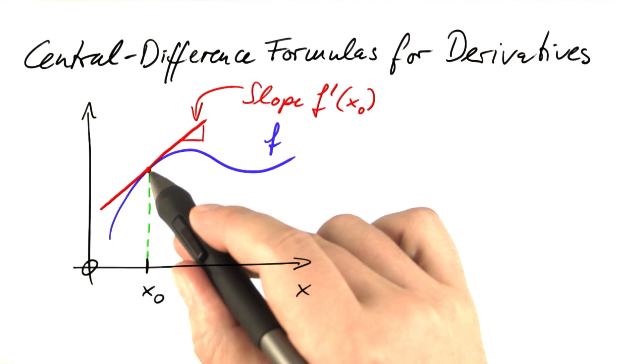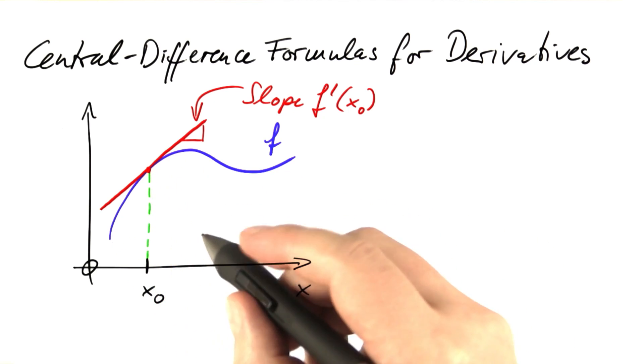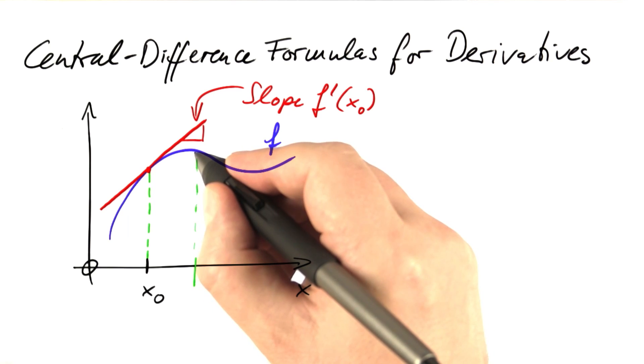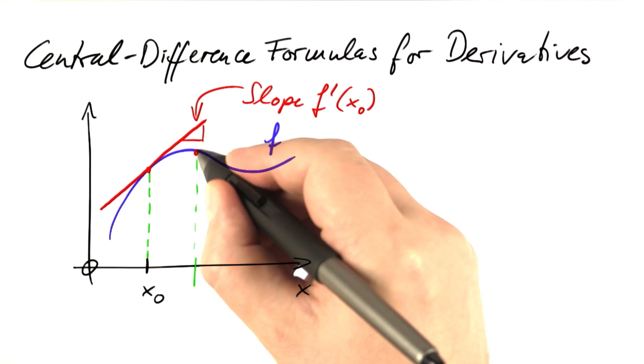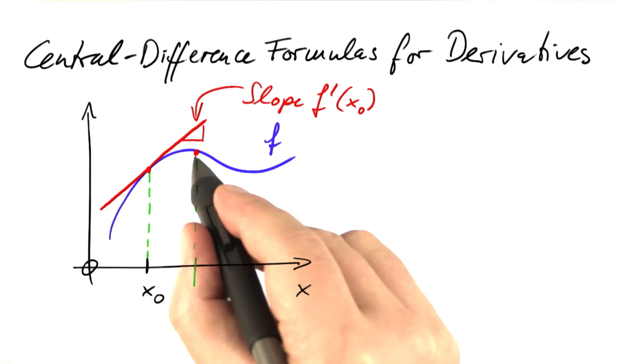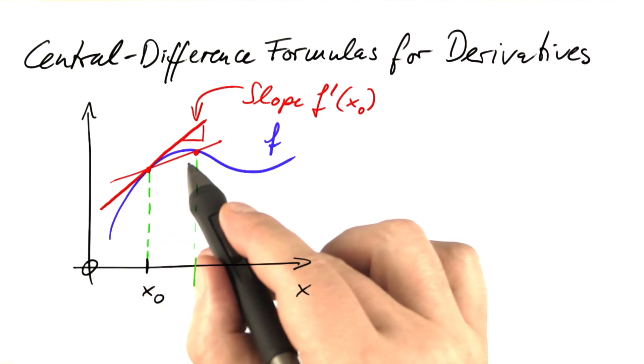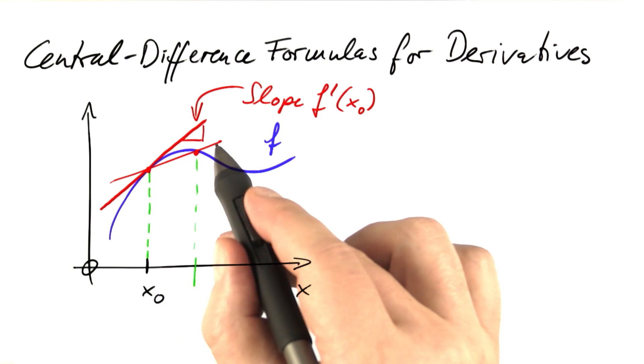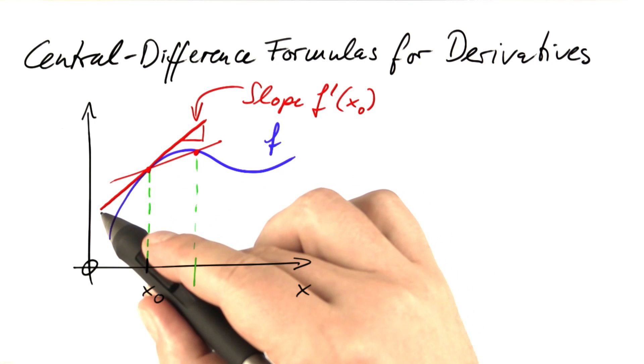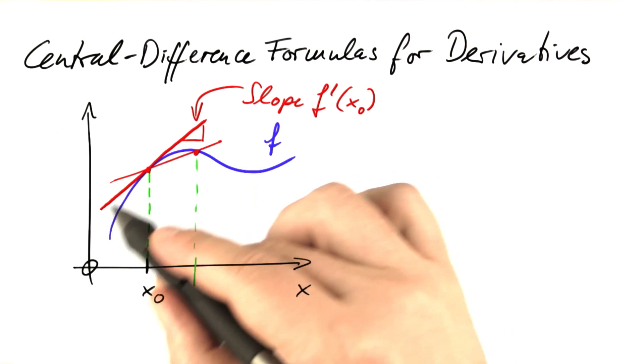A naive approach to determine the slope of this function at this point would be to look a little further to the right, determine another point of that function there, and then connect this point to our original point. And you can see that this does not really work well when we want to determine the derivative of our function, namely the slope of the tangent.